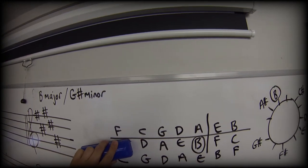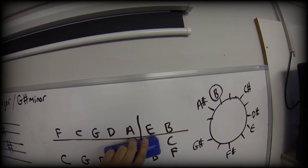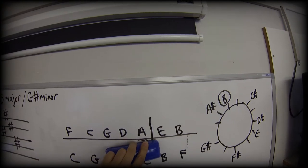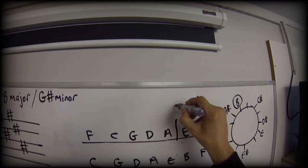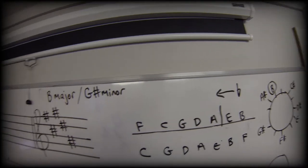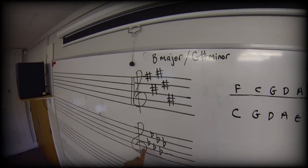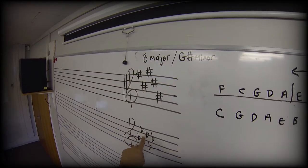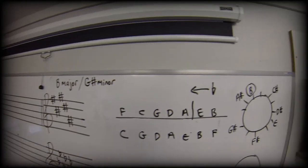So I can now wipe out this middle line here. And I read it in the flats direction, which is that direction. So I've got six flats. B flat, E flat, A flat, D flat, G flat, C flat.